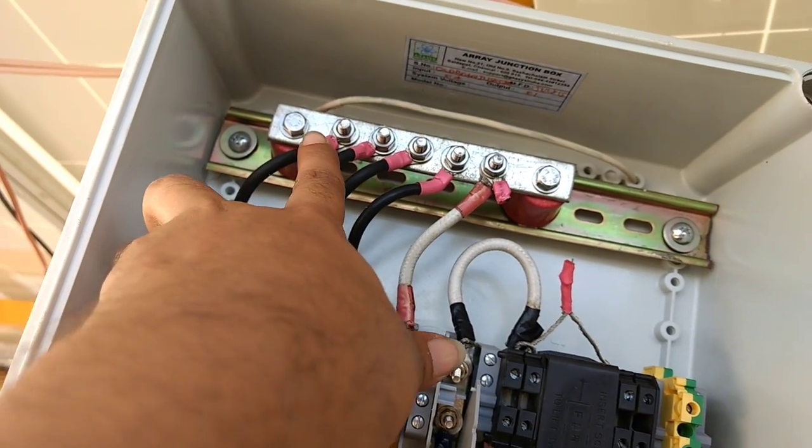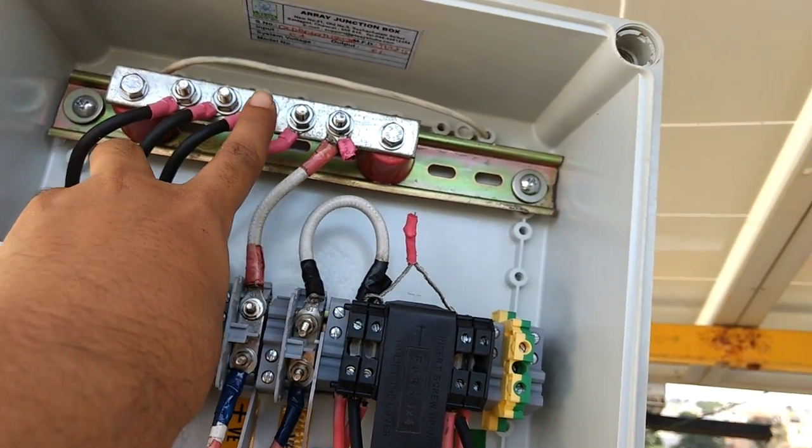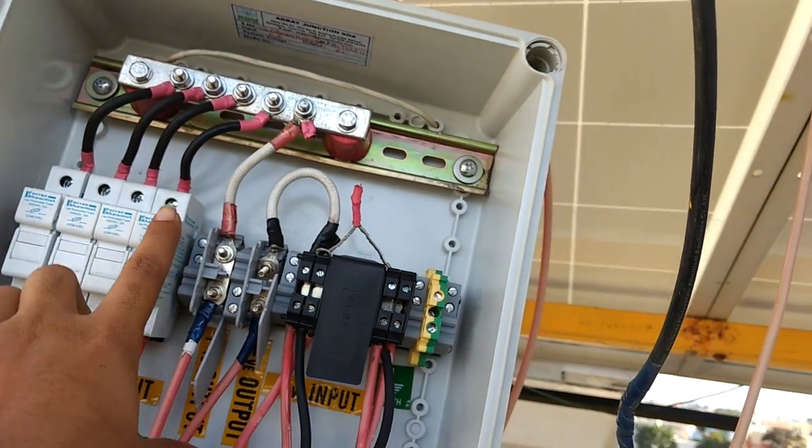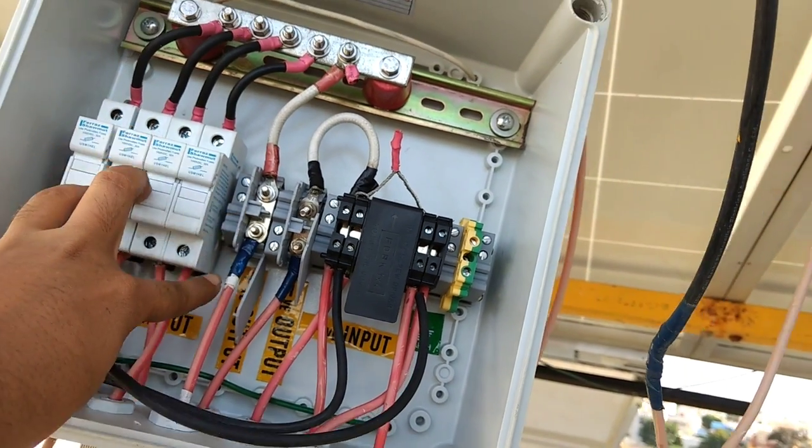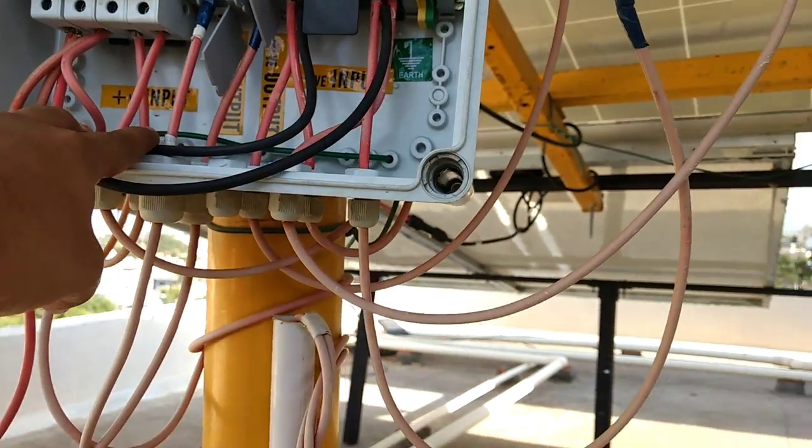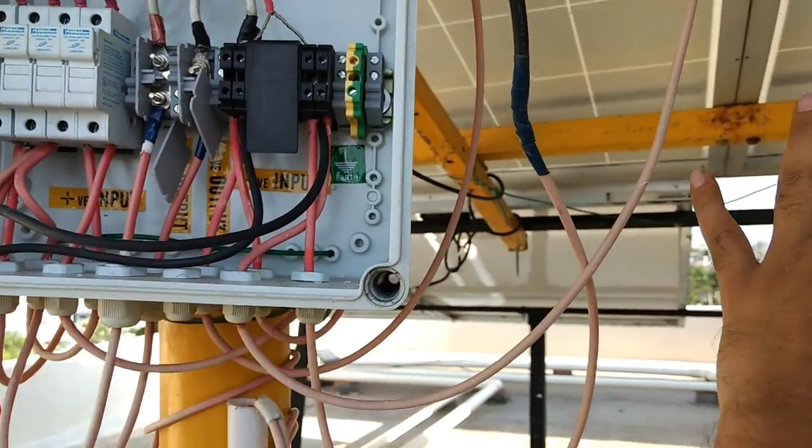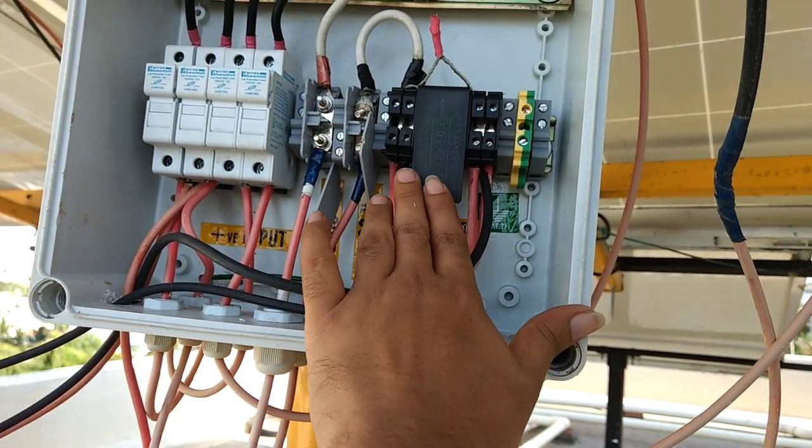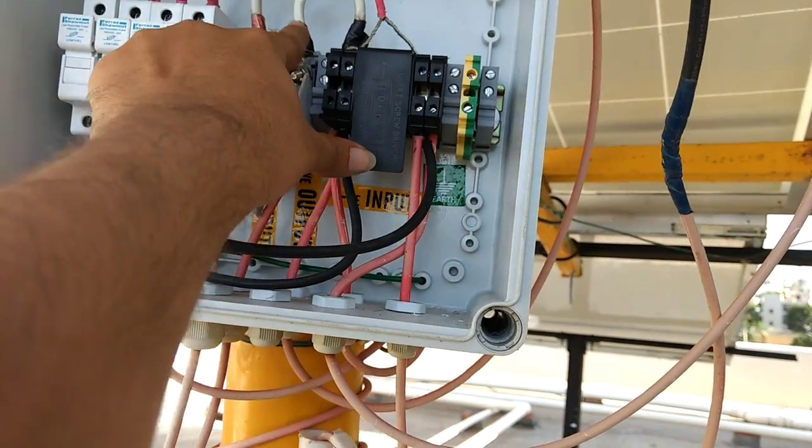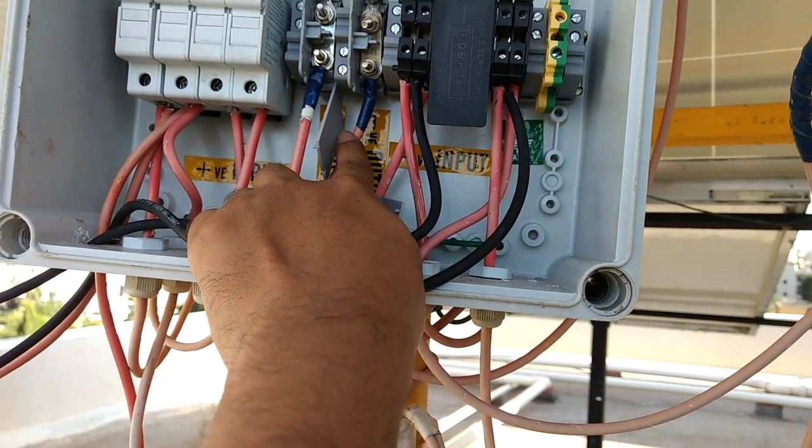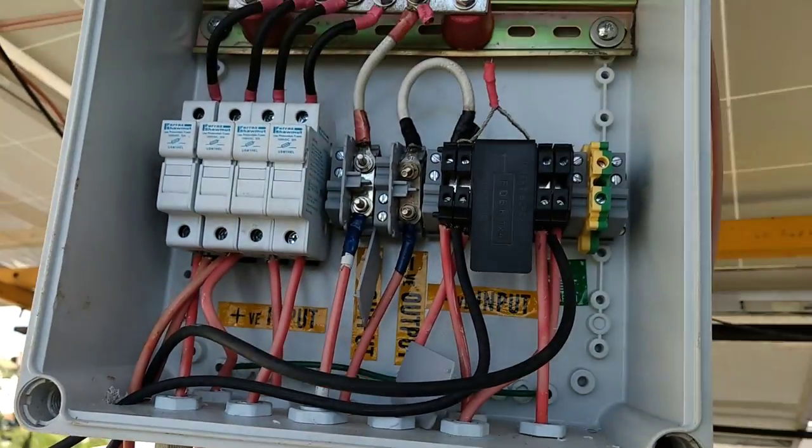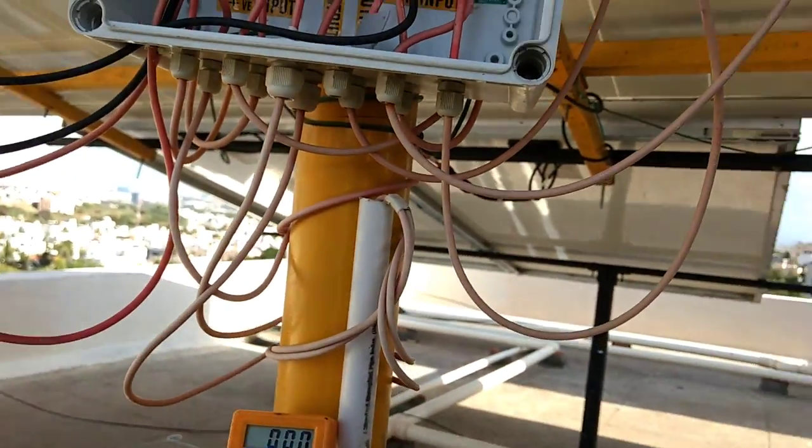So here you can see the rating of the fuse going there and becoming a single point on this bus bar. This bus bar is containing all the positive points of the panels so it's becoming one single wire. In the same way, all the negative wires are coming from this side to this black piece and becoming one wire going down. So we have one plus wire, one negative wire going down towards the UPS.